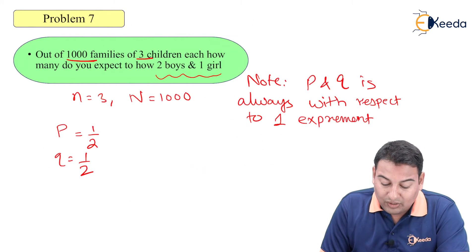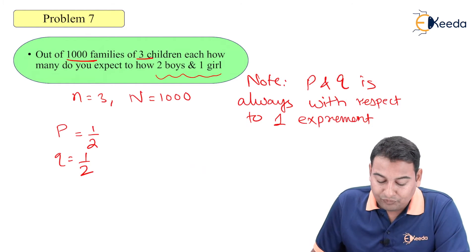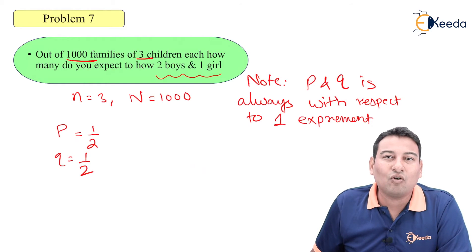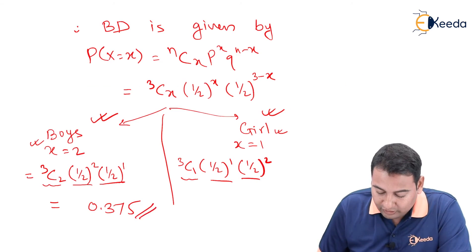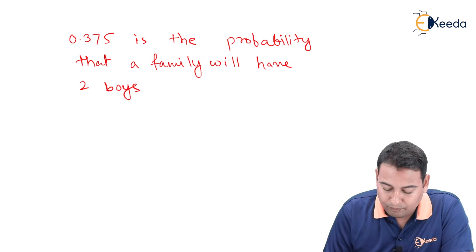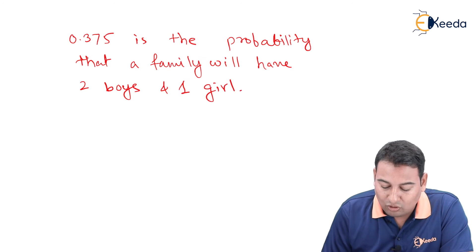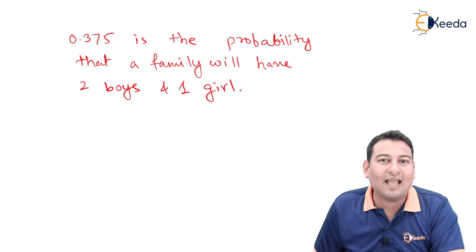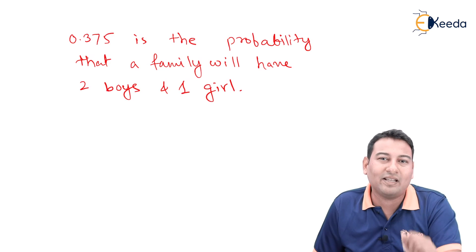Out of 1000 families of 3 children each, how many do you expect to have 2 boys and 1 girl? Friends, here probability is not asked. The answer that you got is 0.375 is the probability that a family will have 2 boys and 1 girl. But probability is not asked. It is asked number of families. Always remember, whenever capital N is given in the problem, you need to multiply by probability.